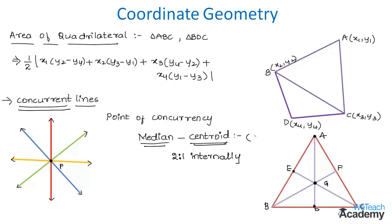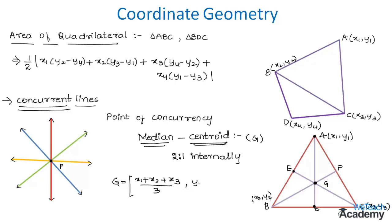The centroid G of a triangle with vertices (x1, y1), (x2, y2), and (x3, y3) is given by the formula: G = ((x1 + x2 + x3)/3, (y1 + y2 + y3)/3).